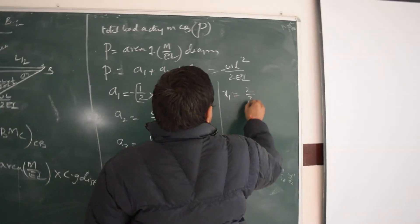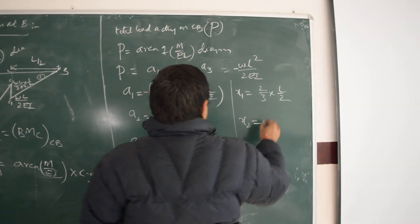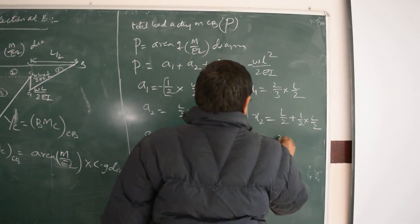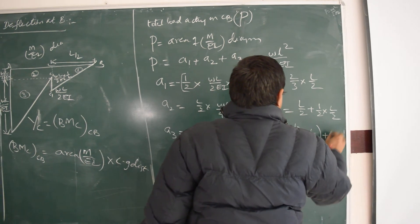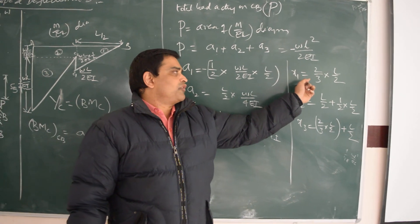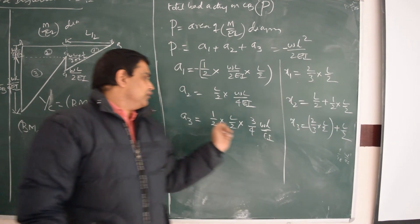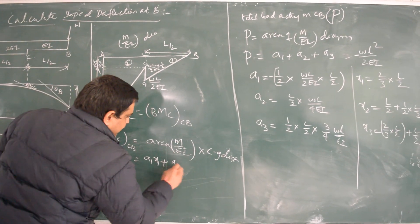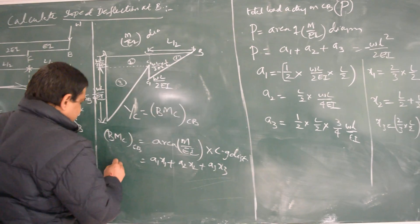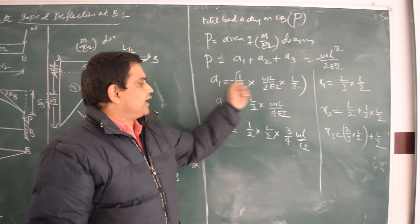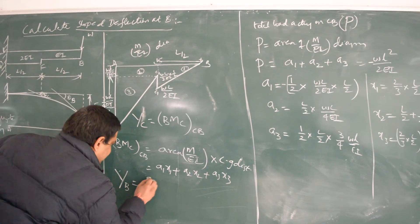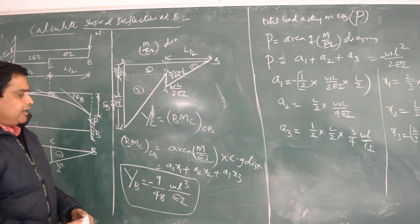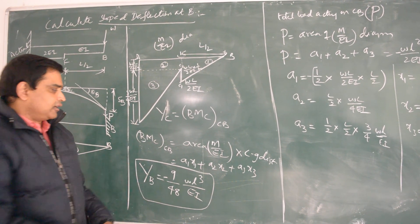X1 is two-thirds of L/2 from B. X2 is L/2 plus half of L/2 from B. X3 is two-thirds of L/2 plus L/2 from B. The deflection at B equals A1×X1 + A2×X2 + A3×X3, which gives a result of 9WL³/(48EI). The negative sign indicates the deflection is downward.